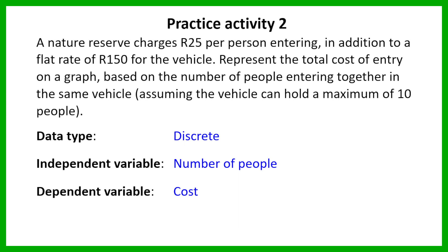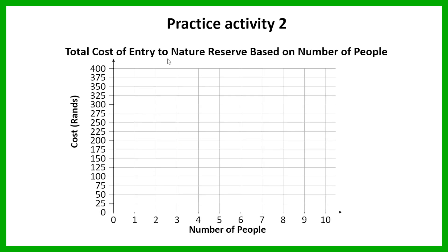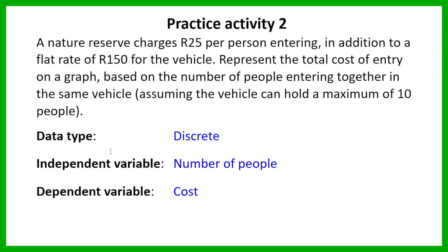So let's go through what your graph should look like. The first thing was to set up your axes — the number of people on the horizontal axis as the independent variable, and the cost on the vertical axis as the dependent variable. You also need a suitable title; I called mine 'Total cost of entry to nature reserve based on number of people.' The nature reserve charges 25 rand per person, so for every additional person you add another 25 rand.